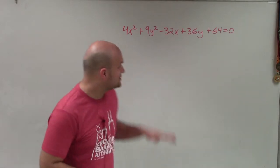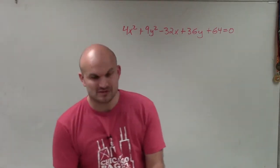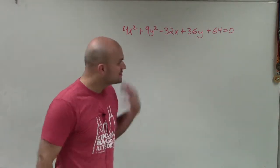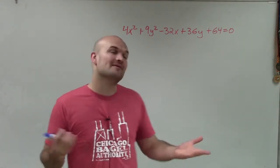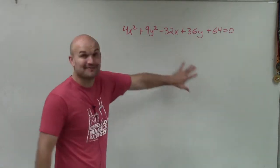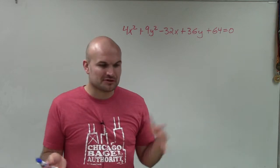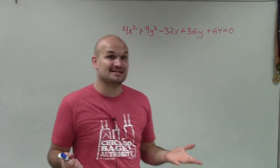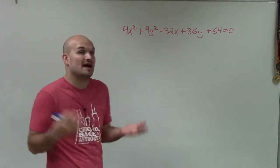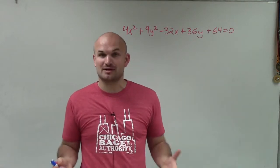Welcome. What I want to do is show you how to graph as well as identify the vertices, co-vertices, foci, and the center. To do that, we need to have our ellipse in standard form, and you can see this is not in the form we're looking for. We need to get this to two sets of binomial squares.